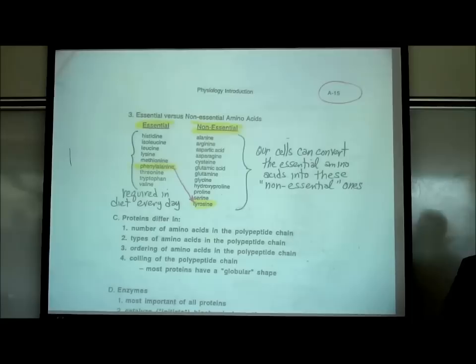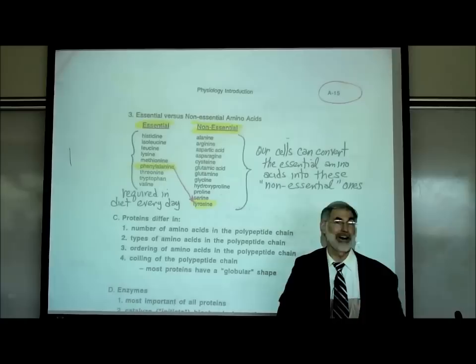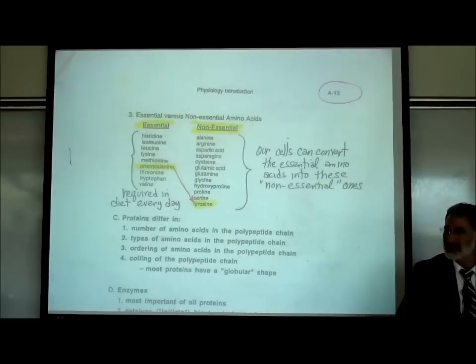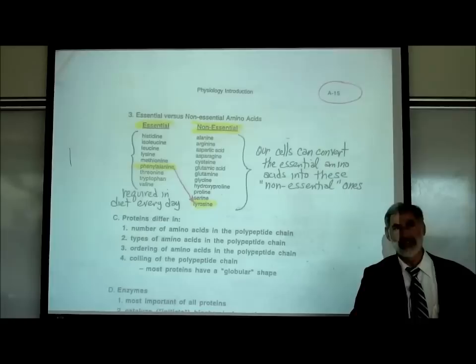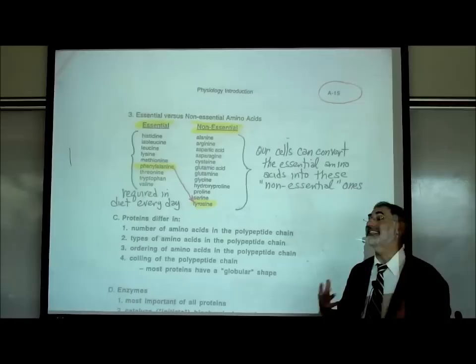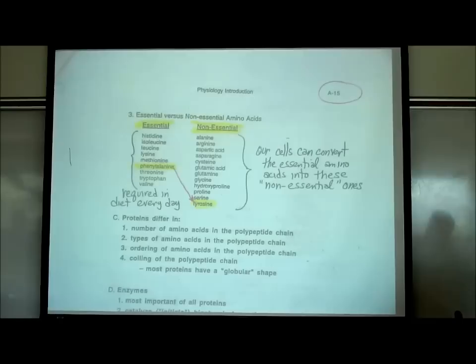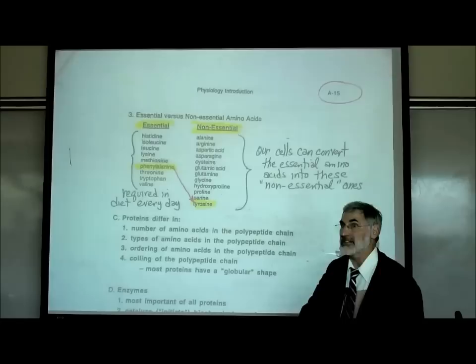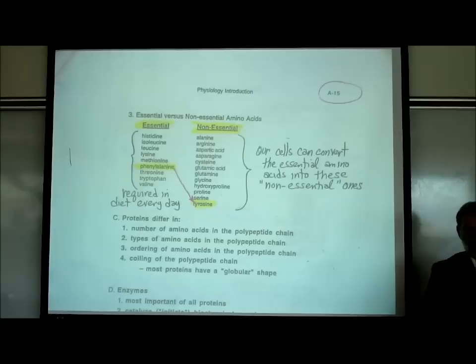Of all foods, the one considered most ideal for providing the best balance of essential amino acids is the egg — advertised as nature's most perfect food. Eggs have the ideal balance of essential amino acids. Most meat and fish are also pretty good. However, plant foods — grains, vegetables, and fruit — usually are lacking some of these essential amino acids.